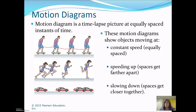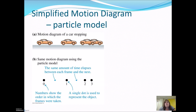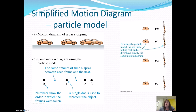When we do motion diagrams in this class, we're not going to draw fancy pictures of cars or runners. We're going to use the particle model — just dots. For a car that's stopping, the dots get closer together. Each dot represents that object. Or if you're jumping off the high dive, as you get closer to the ground you speed up, so the dots get farther apart. Slowing down: closer together. Speeding up: farther apart.